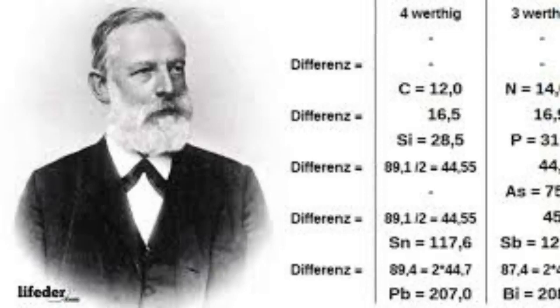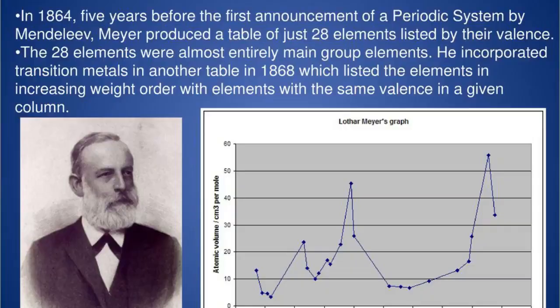Like Mendeleev, Meyer also included predictions of future elements, but unlike Mendeleev did not emphasize these predictions nor suggest details of the physical and chemical properties of the future elements. In 1882, both Meyer and Mendeleev received the Davy Medal from the Royal Society in recognition of their work on the periodic law.